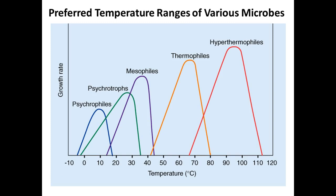Not all organisms are in the same temperature bracket — there are about five categories. We are mesophiles, as are most pathogens that infect us. There are psychrophiles, which love the cold and live in glacial lakes — we're too hot for them, but if they produce toxins in food, that can be a problem. Listeria can grow at refrigerator temperatures, which is why pregnant women must be careful: it can cross the placenta and kill the baby.